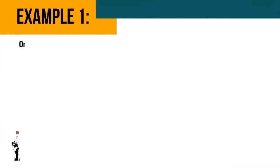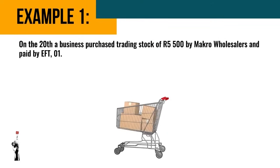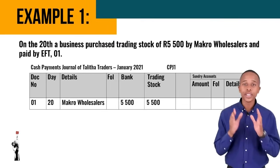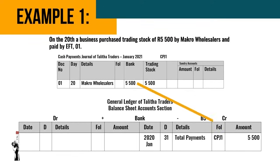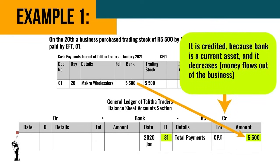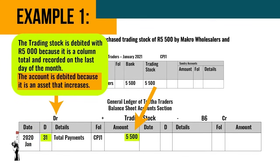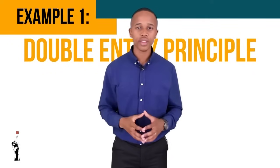Let's look at an example. On the 20th, a business purchased trading stock of five thousand five hundred rand from Macro Wholesalers and paid by EFT. The bank column is credited with R5,500 on the last day of the month because it is a column total. Bank is credited because bank is a current asset and it decreases — money flows out of the business. Trading stock is debited because it is a column total recorded on the last day of the month, and it is an asset that increases.